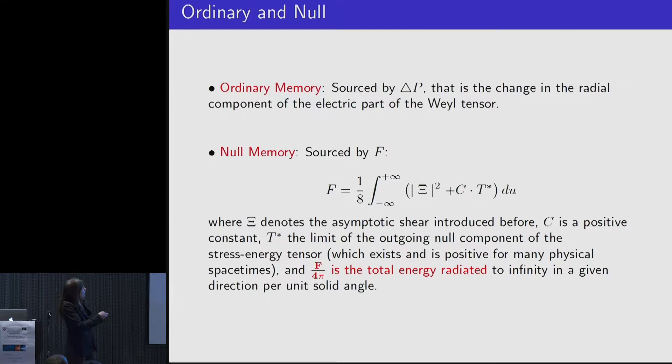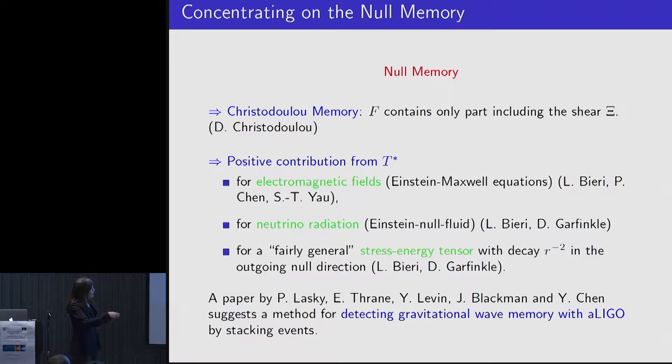The ordinary memory and the null memory are really characterized by the following. The ordinary memory, again, this is one component of the curvature that changes over time. The null memory, if I write it down, this is energy radiated to infinity. Here, this first part, this is what we usually call the news tensor, so this is a purely geometric part, the shear that gets into this formula. The second part, this is any type of energy momentum tensor that behaves the right way. If you have an energy momentum tensor coupled to Einstein equations that behaves the right way, this will actually also contribute to that.